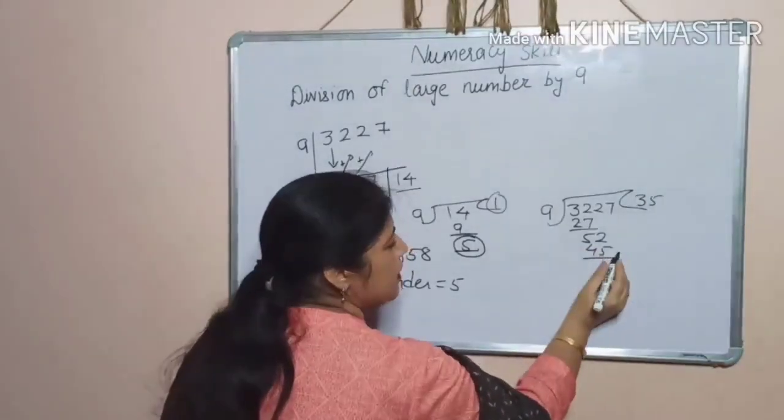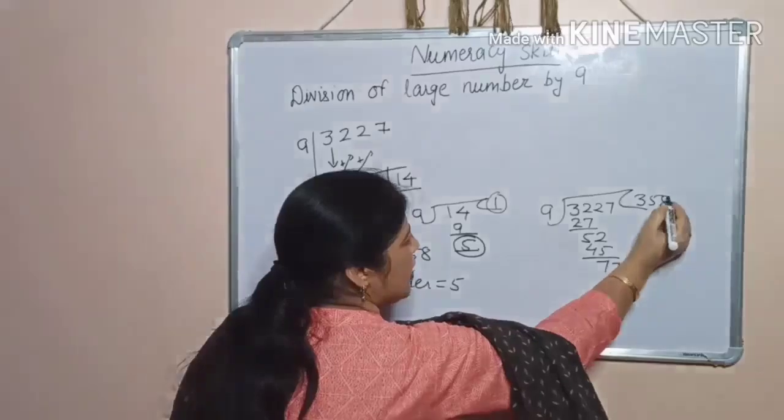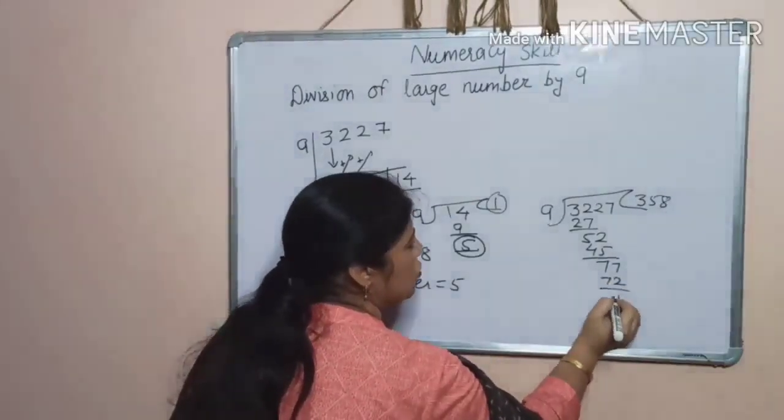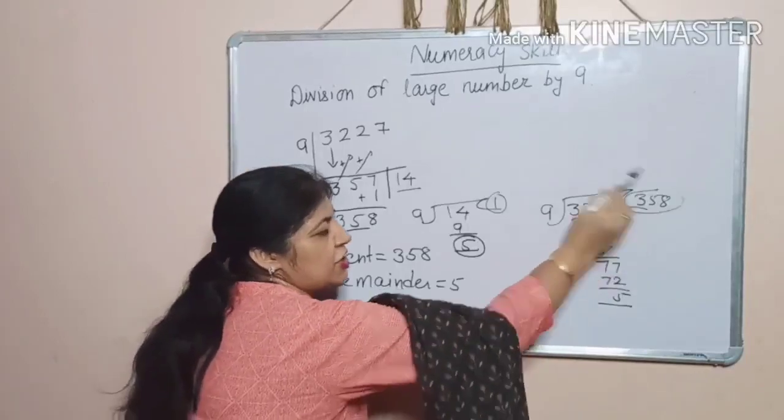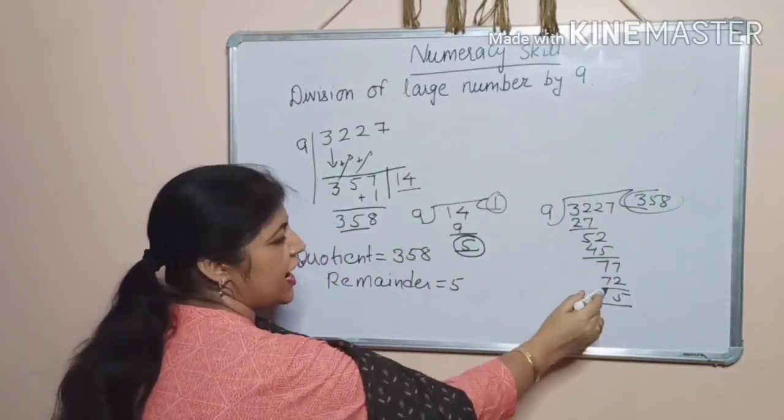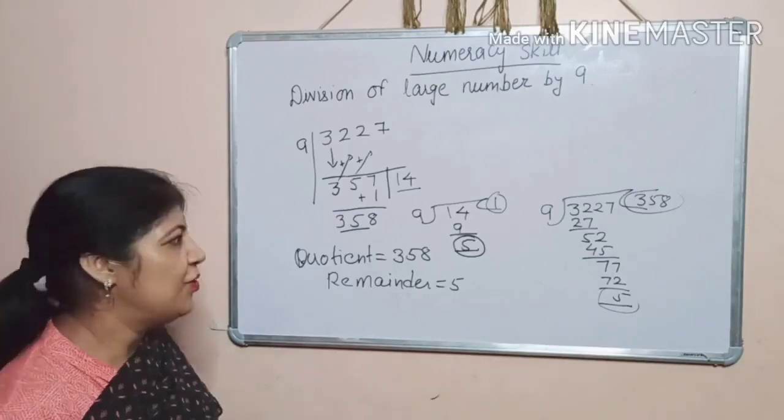45. 12, minus 5, 7, 7. 9, 8, 72. Now, you can see. Quotient is 358 and remainder is 5. Okay?